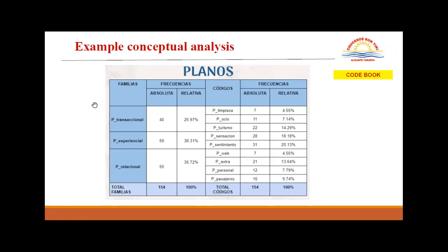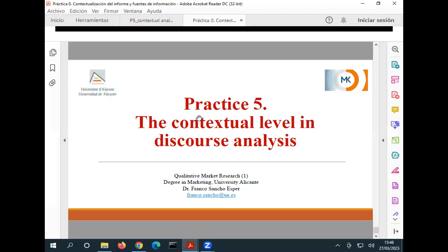This is basically what you have to do. In your hermeneutic unit, you have to upload all the different primary documents — all of them. Once you have them, you need to redo practice number four: underline the sentences you think could be interesting regarding generators, customer journey map, and levels. Once you have done this, you code. And once you have coded, creating these tables is very easy — it's just copying frequencies.